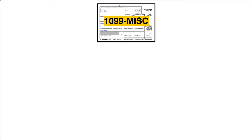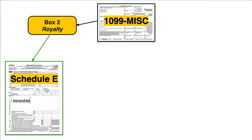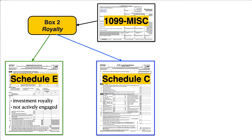Disclaimer: this is not tax advice, but generally, if the royalty income is from an investment or if you are not actively engaged in the business that generated the royalty, then the royalty is reported on Schedule E. If the source of the royalty is derived in the ordinary course of the operation of a business, such as receiving a royalty from book sales as an author, then the royalty income is reported on Schedule C.